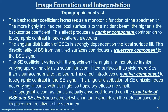The topographic contrast actually observed depends on the exact mix of BSE and SE electrons detected, which in turn depends on the detector used and its placement relative to the specimen. The final detector configuration — where it is placed with respect to the specimen and the electron beam — is very crucial in detecting the signal and its contrast.